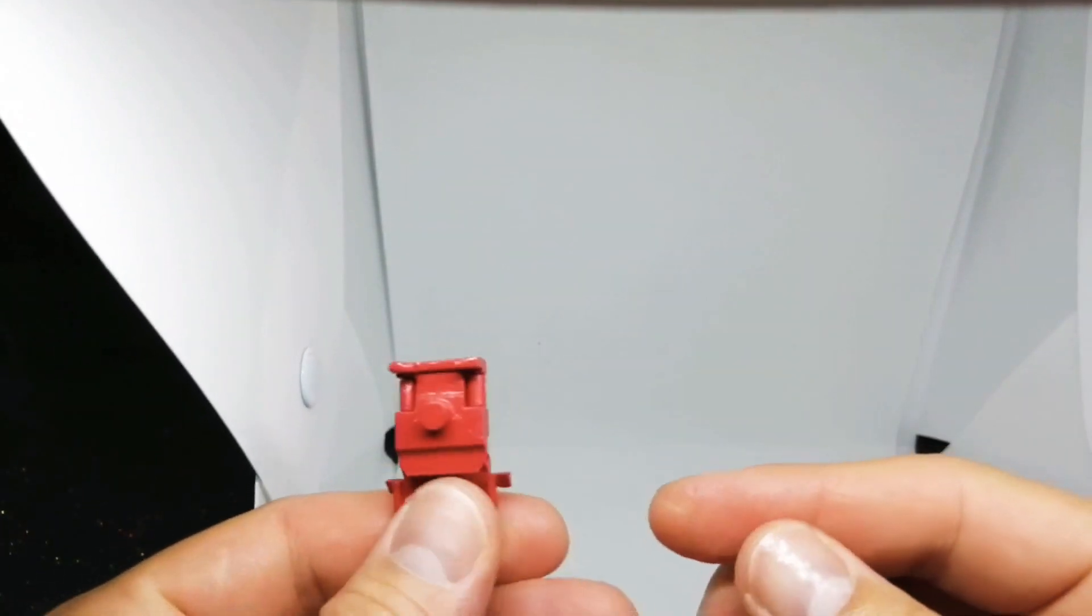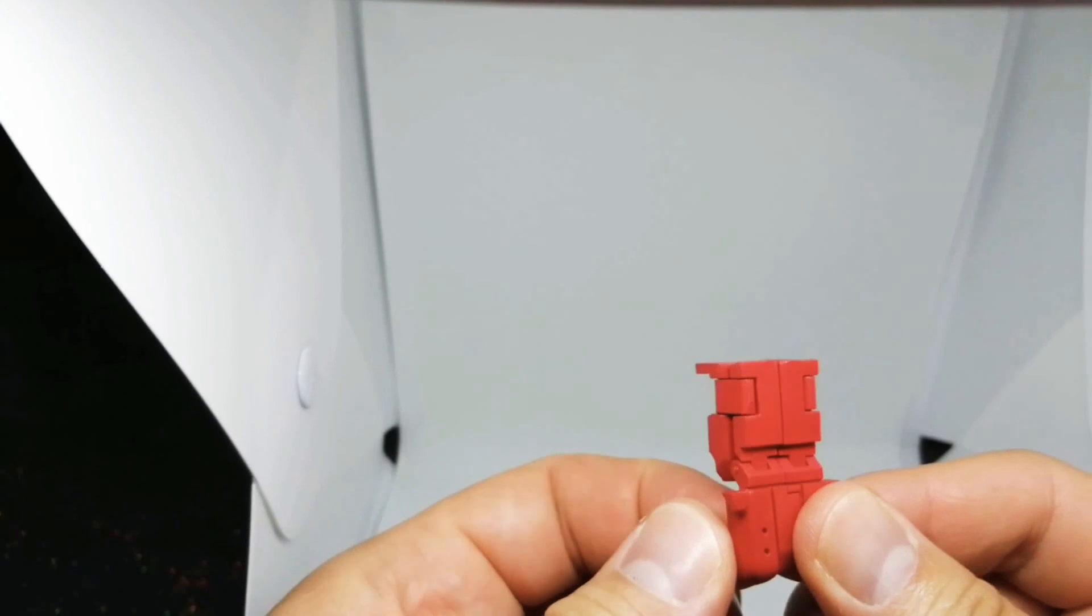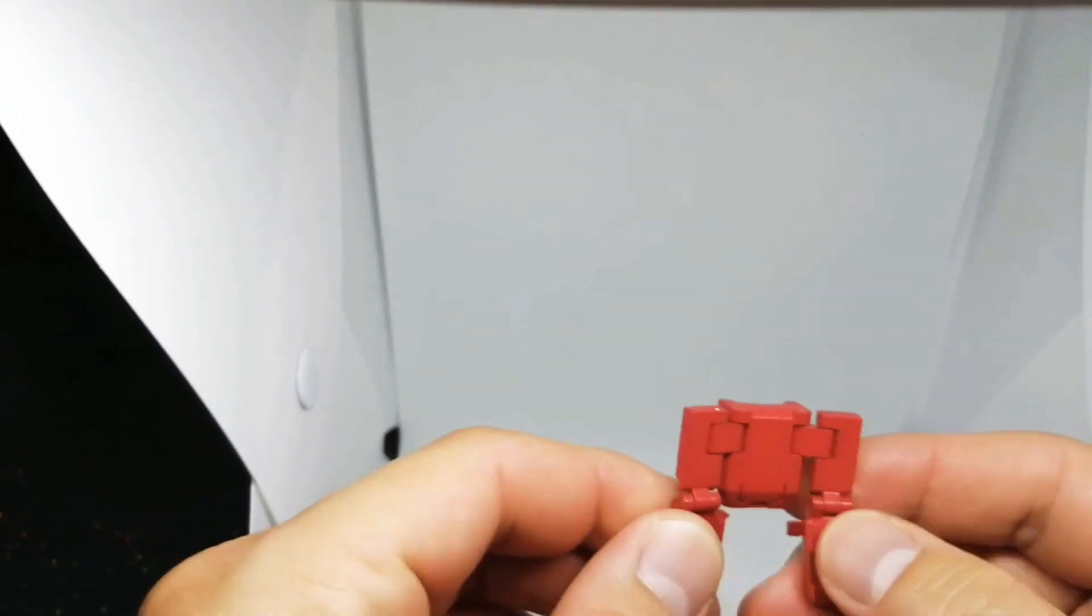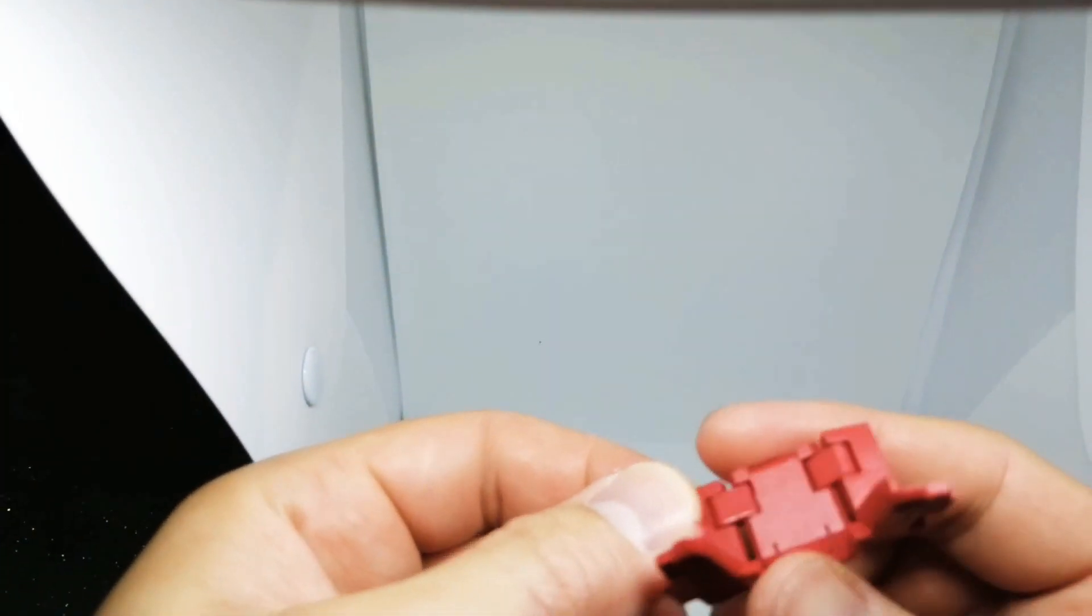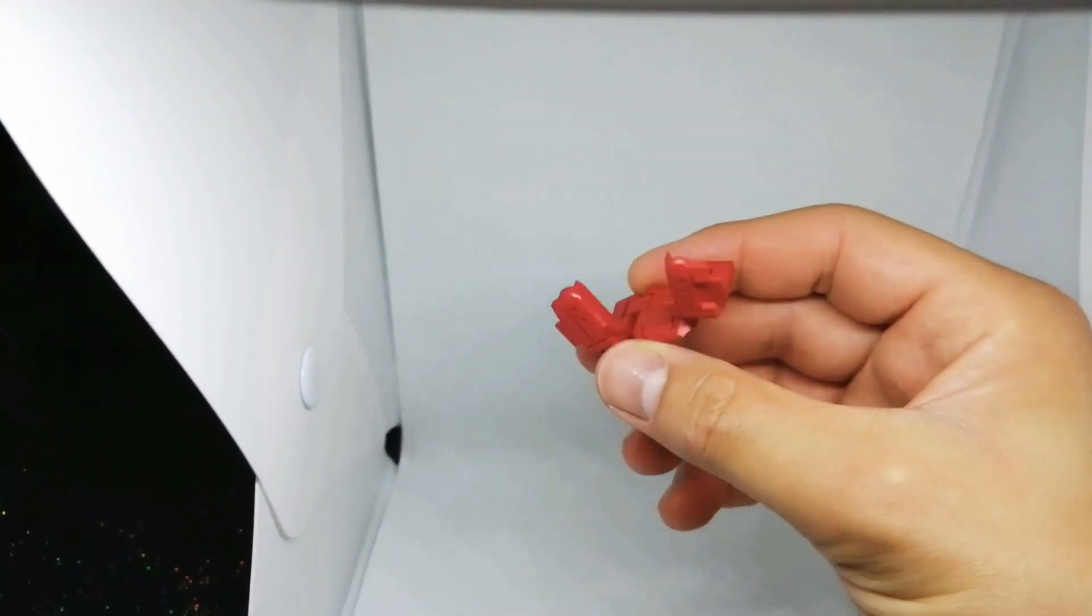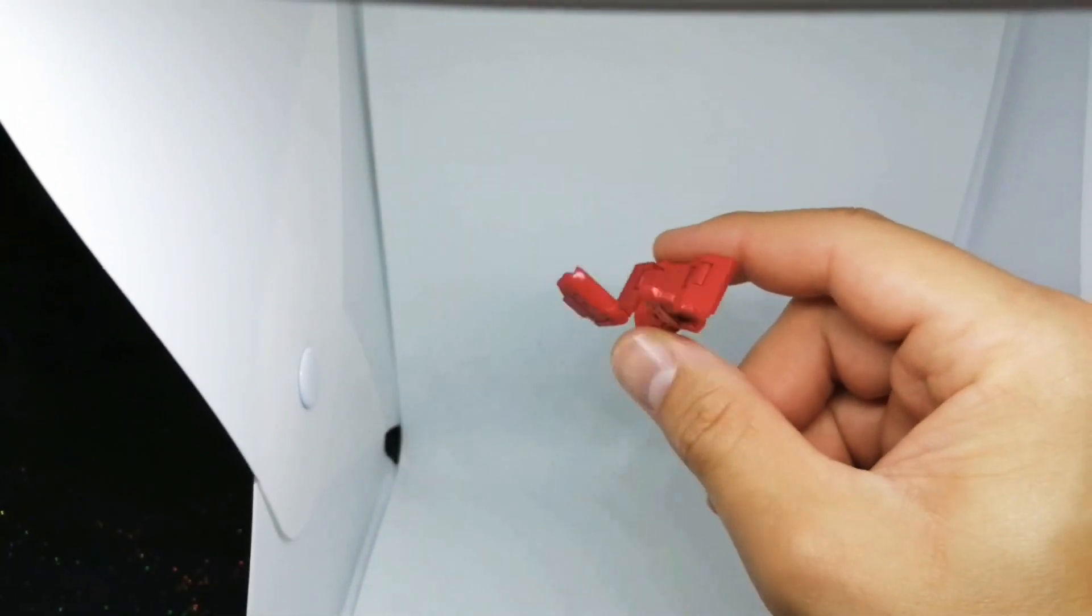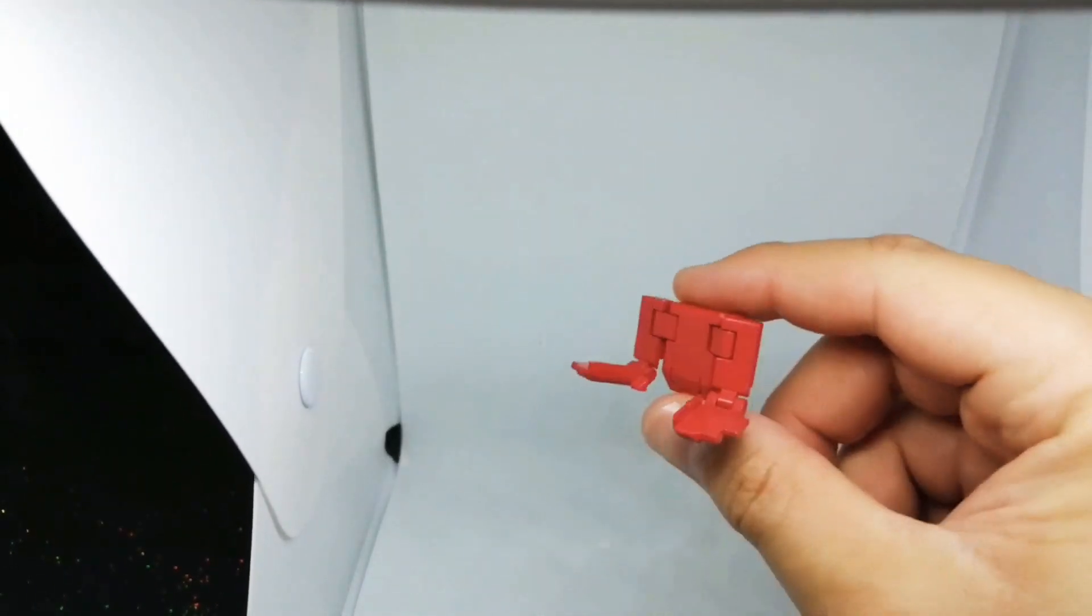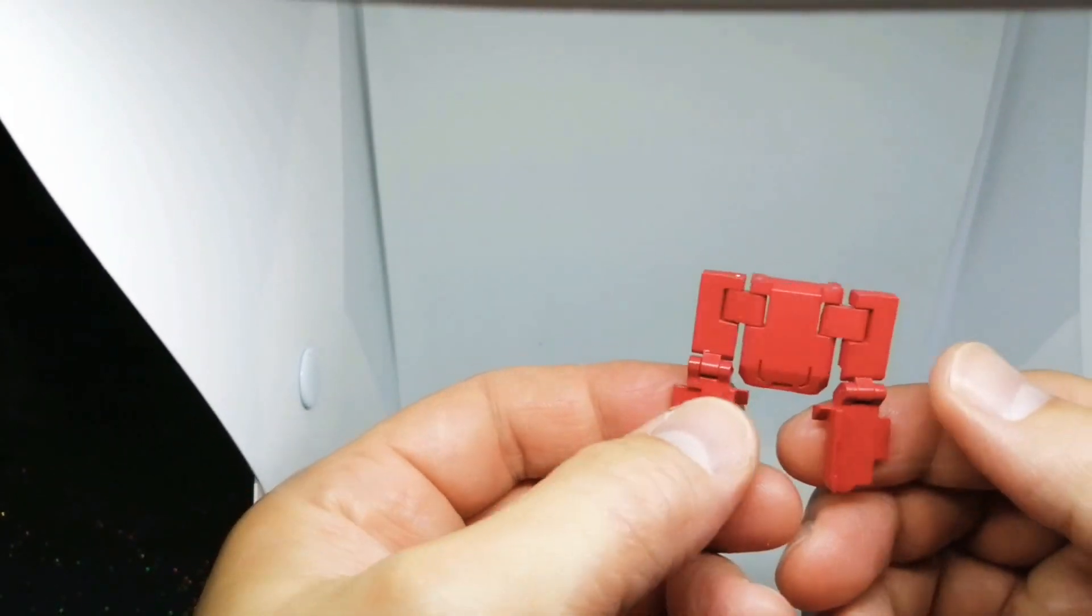This is how it comes in the package. It doesn't come with any instructions but it's pretty much self-explanatory. It transforms as an add-on backpack should. It's like a little flick, it looks like that thing, begins with an R, I'm sure it does. It looks like that thing off Pokemon, like a Pokedex, Rotodex or whatever.